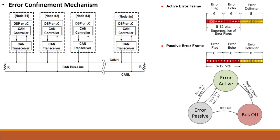When a frame is corrupted, the node will transmit an error flag. In the active error state, it will transmit six consecutive dominant bits. Due to these six consecutive zeros, all other receivers will also transmit an error flag of six zeros. Whenever the frame is corrupted, all other nodes which receive the error flag will also generate an error.